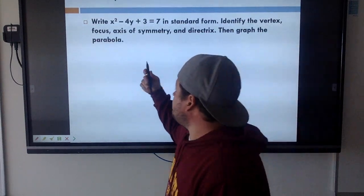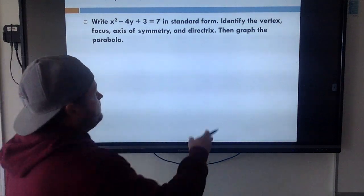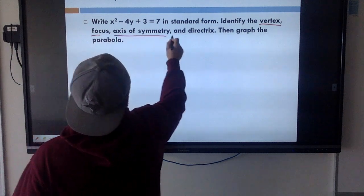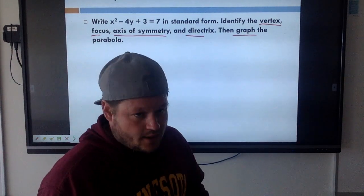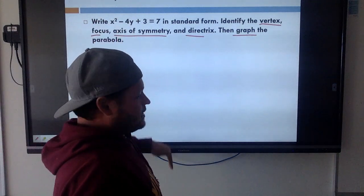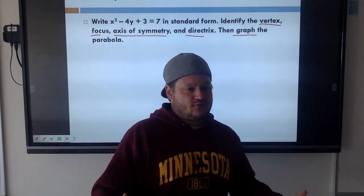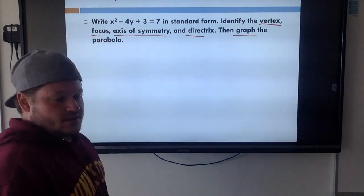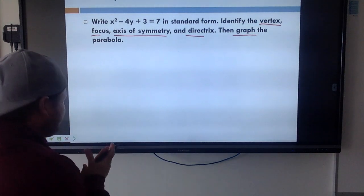Write x squared minus 4y plus 3 equals 7 in standard form. Identify the vertex, focus, axis of symmetry, and directrix, and then graph it. We did all that before in the last video. The only thing is I've got to get this to look like x minus h squared plus 4 times focal length times y minus k - that same formula from the last video.